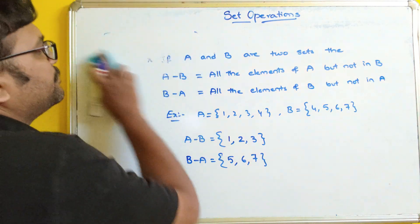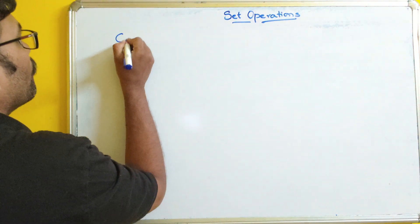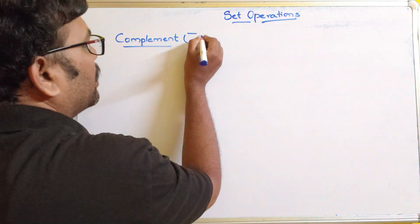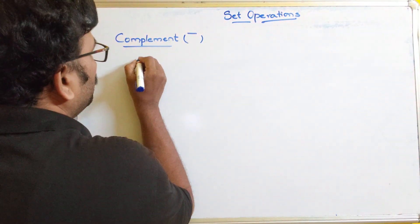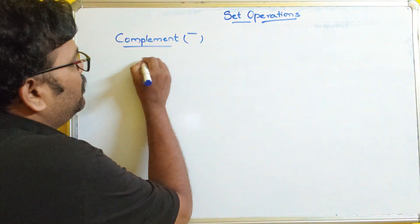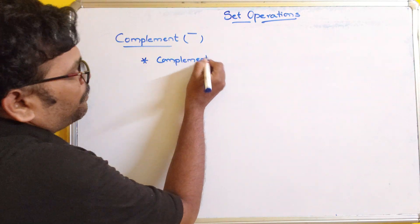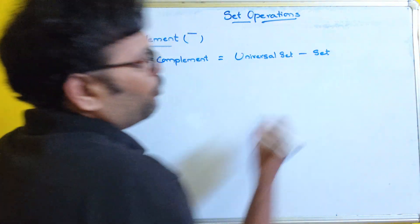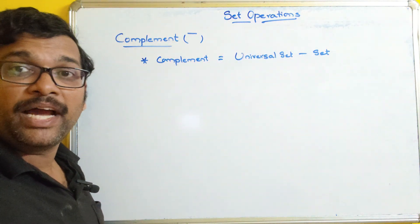There is one more operation called complement. It is usually represented with a bar over the variable. We need to give horizontal lines above the set variable. For complement, we need to consider the universal set. The complement of a set equals the universal set minus that set.